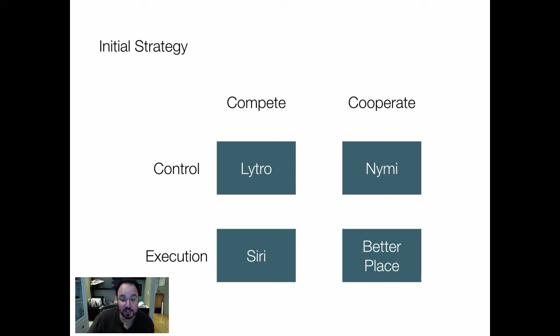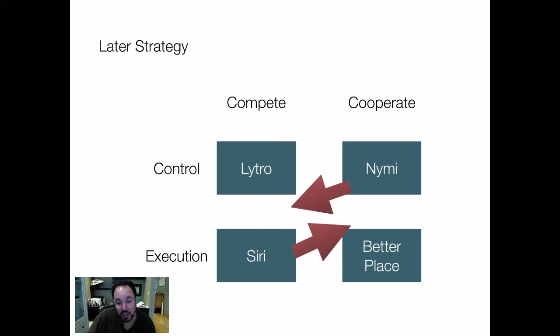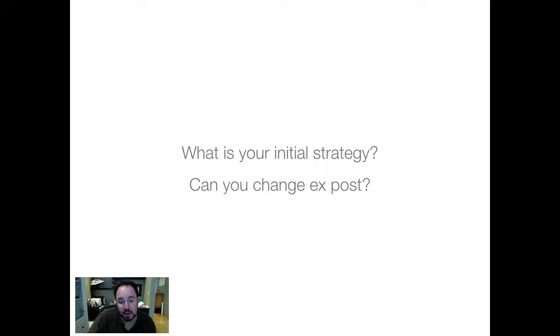Some of these firms, after these initial models, learned something about those models and about the markets they were in, and they pivoted. NIMI's later strategy moved towards competing with established firms and putting out a product quickly, ceding some control because everybody became aware of the idea of using a heartbeat signature. Siri cooperated with an established firm — Apple — with more seeking of control of that technology. Better Place essentially went bankrupt; it was unable to change strategy or pivot. And Lytro just hasn't lived up to its promise — one suspects a pivot is soon in their offing, moving towards cooperating with existing firms.